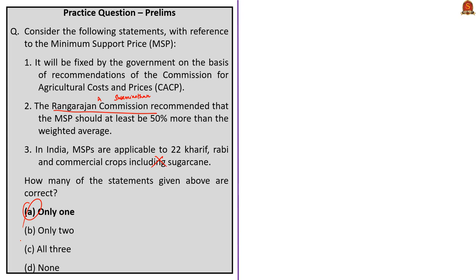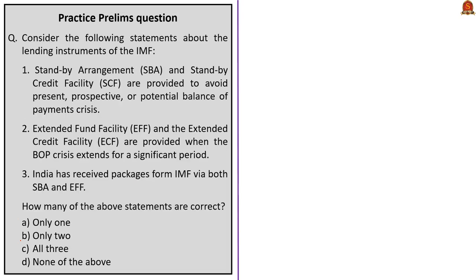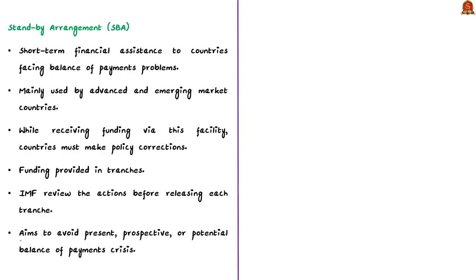Let us move on to the next MCQ, which talks about the lending instruments of the IMF. Before answering, let us get into the basics of the various lending instruments of the International Monetary Fund. The first one is the Standby Agreement. The standby agreement provides short-term financial assistance to countries facing balance of payment problems. Historically, it has been the IMF lending instrument most used by the advanced and emerging market countries.